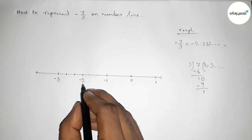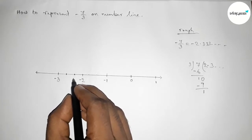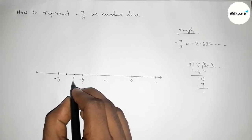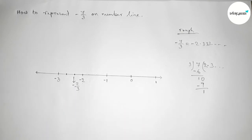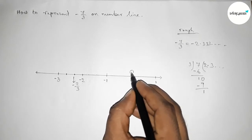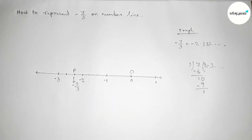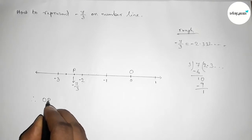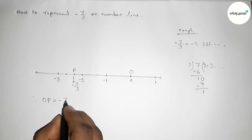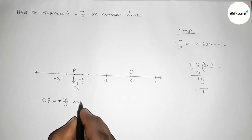So this is -7/3 on the number line. Now taking point O here and point P here, the length OP equals 7/3. Note that the value is always positive since length is always positive.